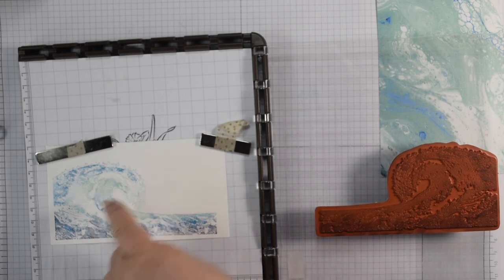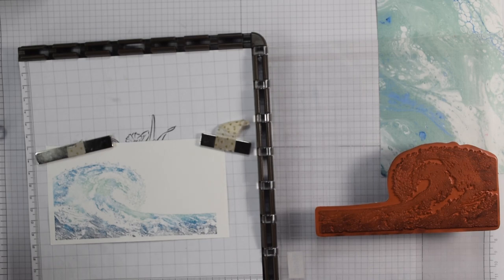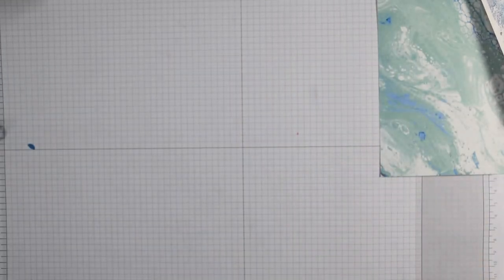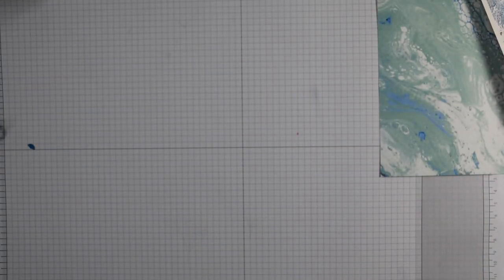Then in with your Stamparatus, give that a good press down, and there we have a beautiful wave. If you wanted a bit more color, you could always come back in. The beauty of the Stamparatus is you can do that. But I'm quite happy with that for my stamping.